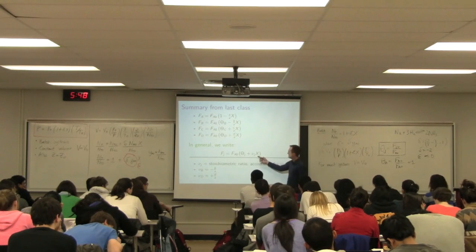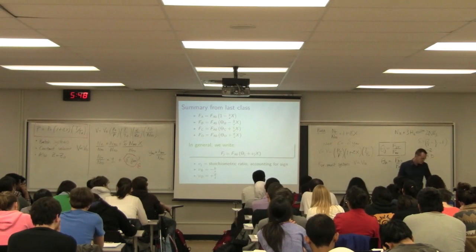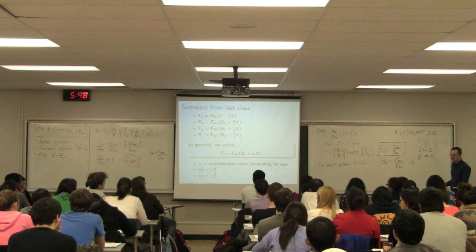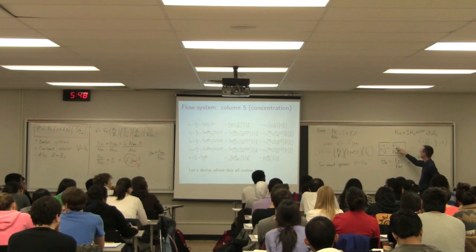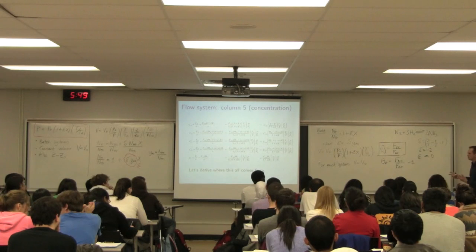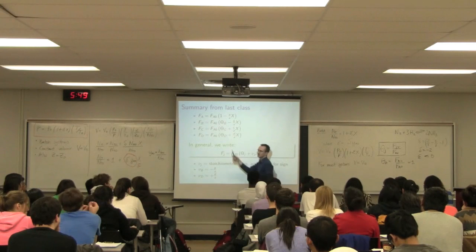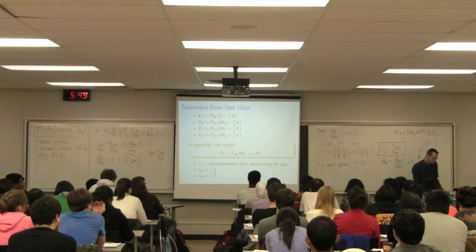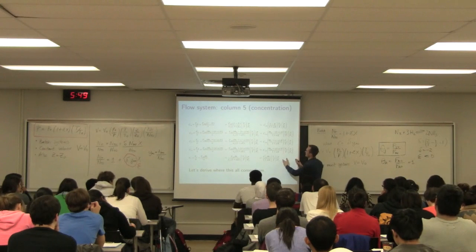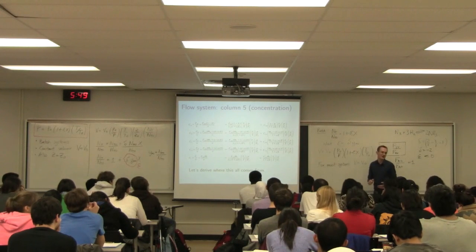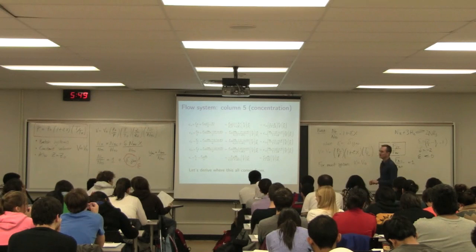We're going to define F_J in terms of the inlet flow of A and the ratio given by theta. Where we're heading is to derive this complex expression on the right-hand side — the ultimate table you can use in exams. You don't need to derive this every time, but it is important that you understand where these terms come from and how to interpret them.